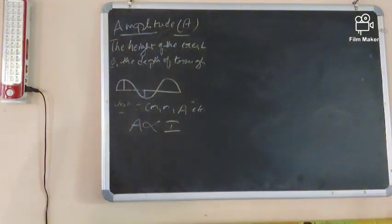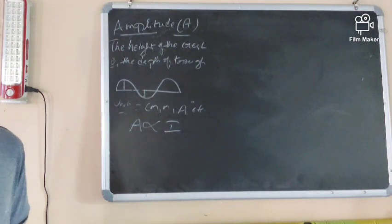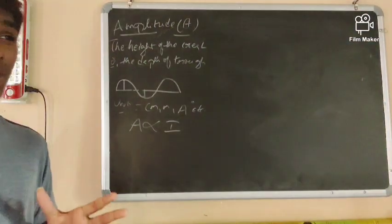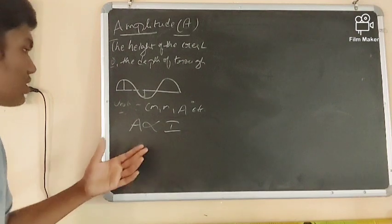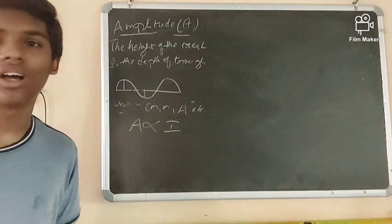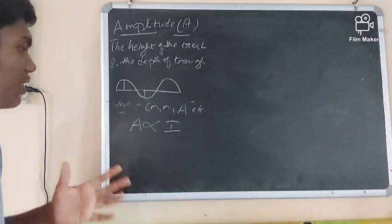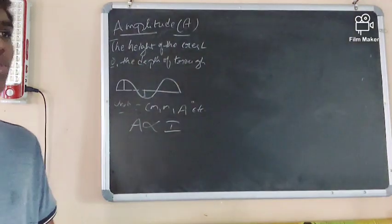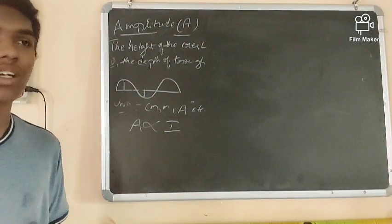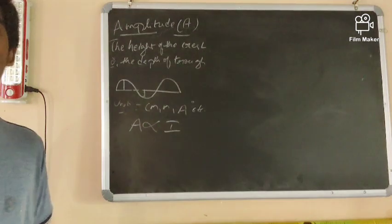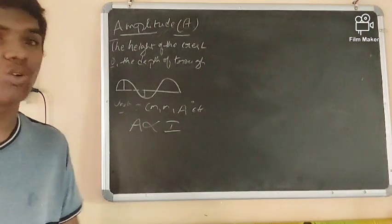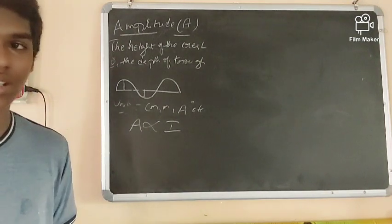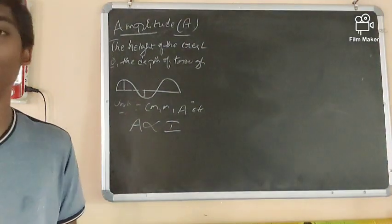Amplitude is directly proportional to intensity. In the afternoon, the intensity of light is very bright because the height of the crest or trough is very large — they have a shorter wavelength. White light has a lesser wavelength than red light. In the evening, the wavelength is longer, the amplitude is less, and so the intensity is also less.